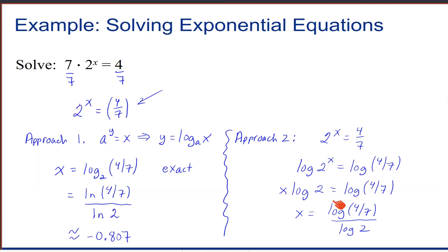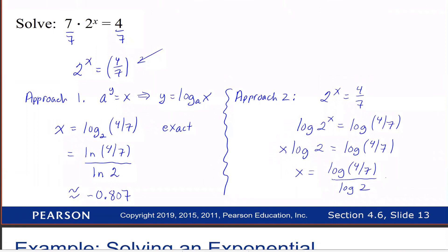Note that it doesn't matter whether you use natural log or common log—these are equivalent because of the change of base formula. So if we evaluate each of these on our calculator, you would get that x is approximately negative 0.807.